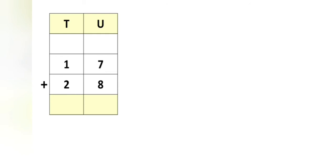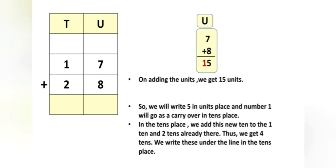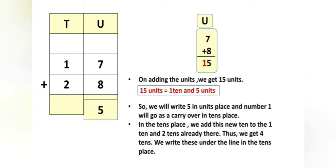Always remember, children, while doing addition, we must add the units place first. So let us add the units place first. 7 plus 8 is equal to 15. On adding the units, we get 15 units. And 15 units means 1 ten and 5 units. So let us write 5 in the units place.